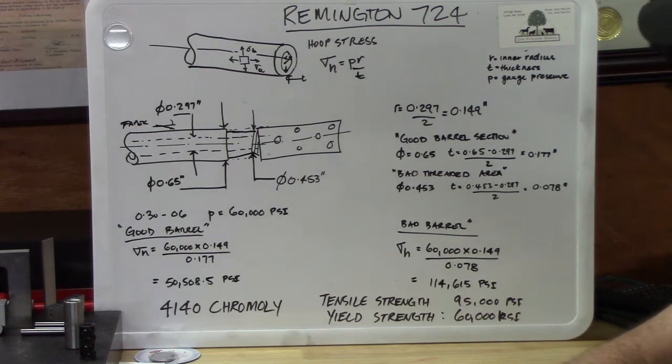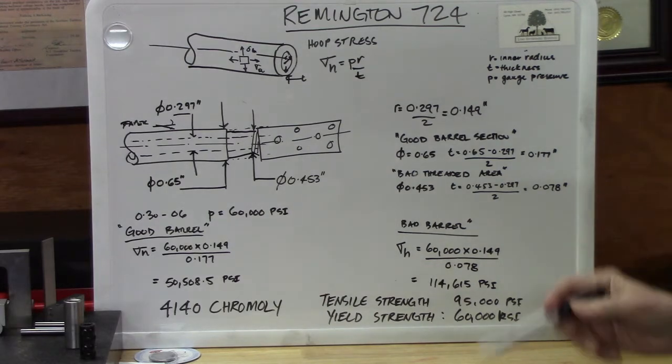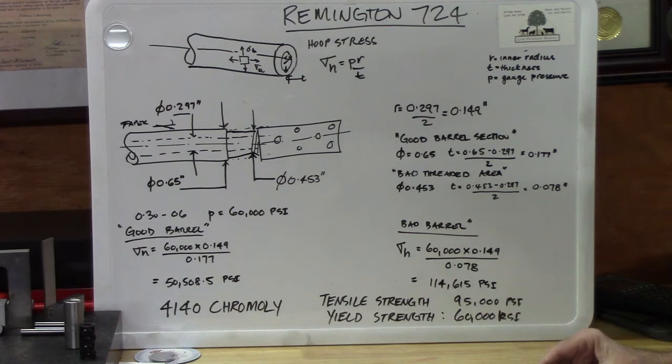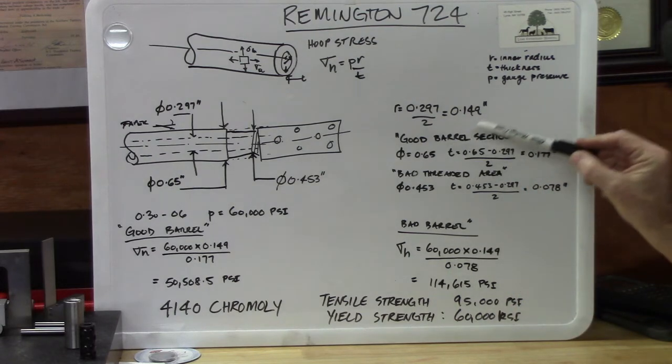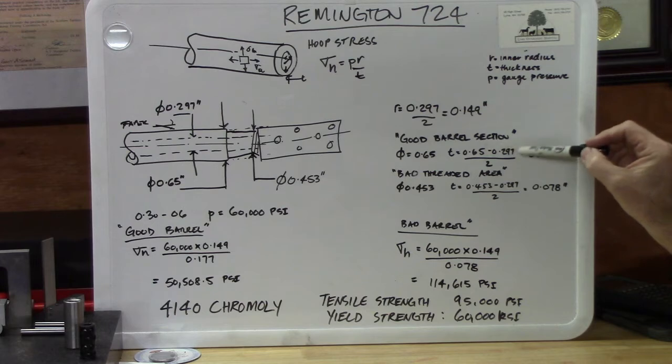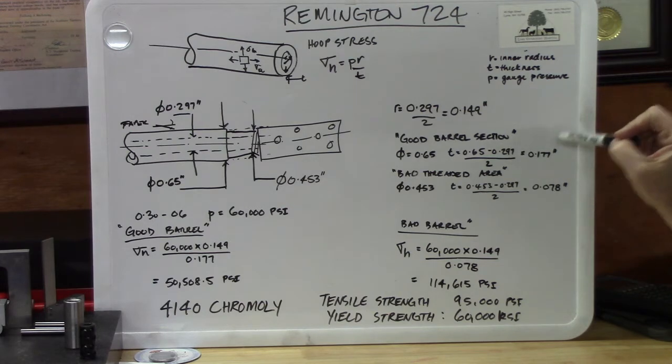The barrel pressure in a 30-06 is around 60,000 psi. So we have basically everything we need to know to work out the hoop stress in this pressure vessel. So in the good barrel section, I needed to know what is the wall thickness. So it was simply a case of taking the outside diameter, subtract the inside diameter, divide by 2, that gave us that wall thickness.